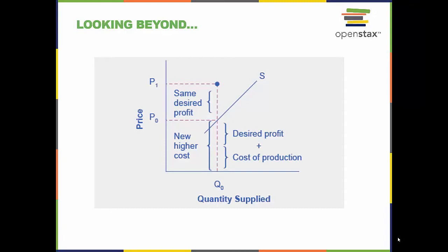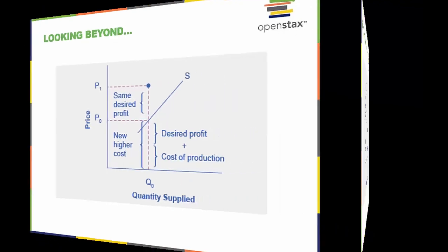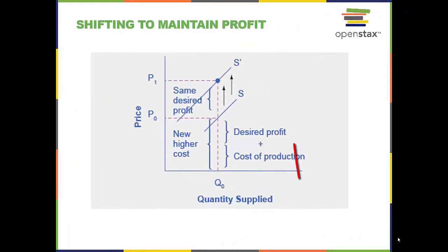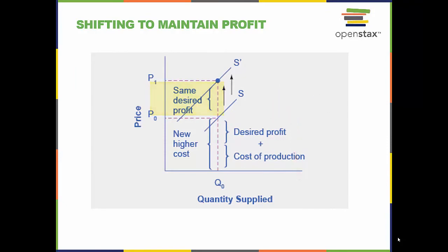Because the cost of production and the desired profit equal the price a firm will set for a product, if the cost of production increases, the price for the product will also need to increase to maintain the desired profit level of the firm. When the cost of production increases, the supply curve shifts upward to a new price level in order to maintain the desired profit of the firm.